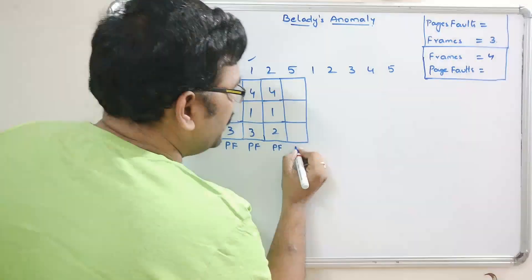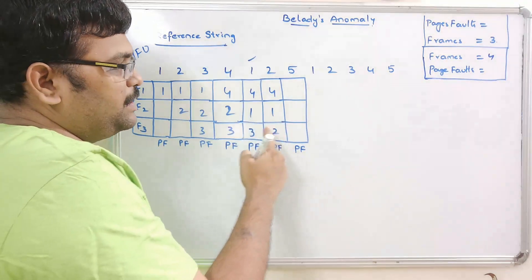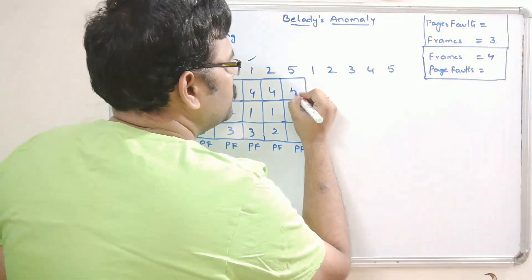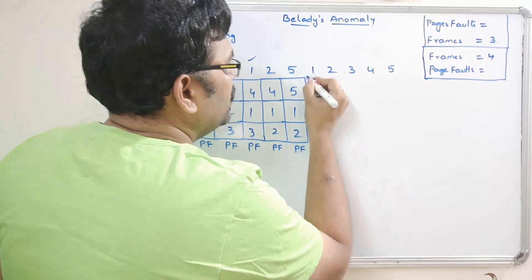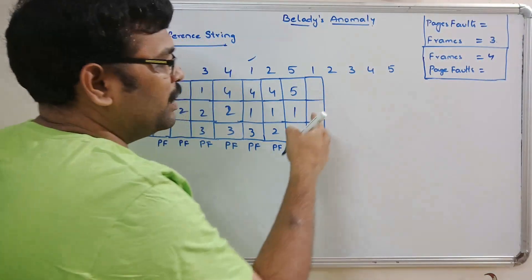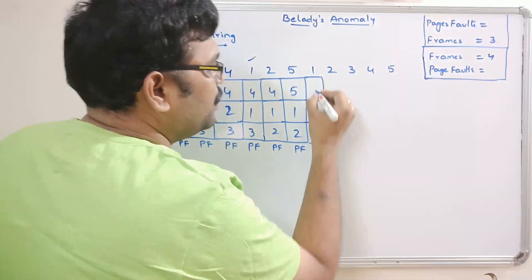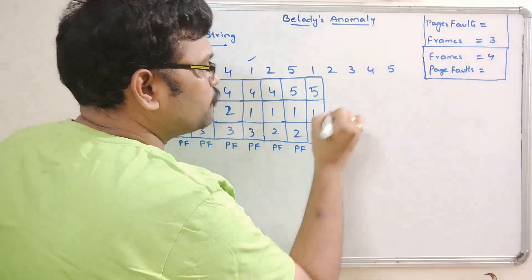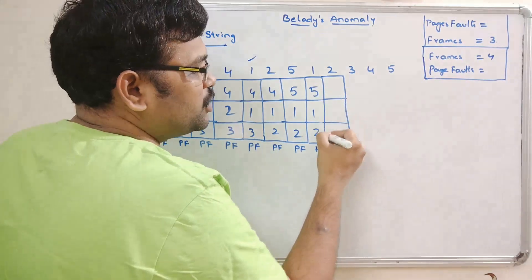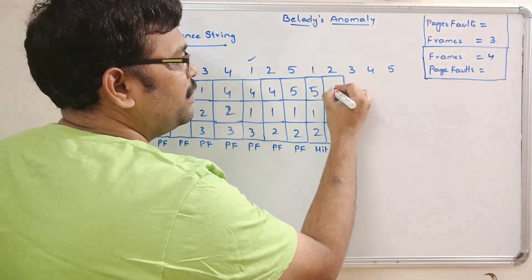Page 5 is not available — another page fault. Among the three frames, page 4 is the oldest, so it is replaced with page 5: frames become 5, 1, 2. Page 1 is already available — a hit, no page fault, no replacement needed. Page 2 is also available — hit, no page fault.